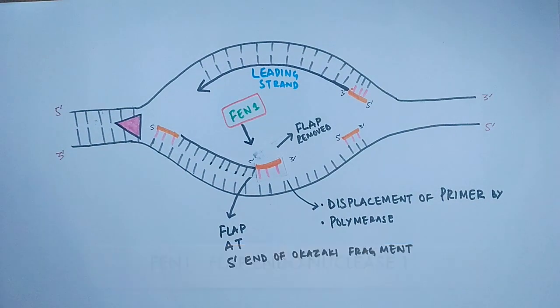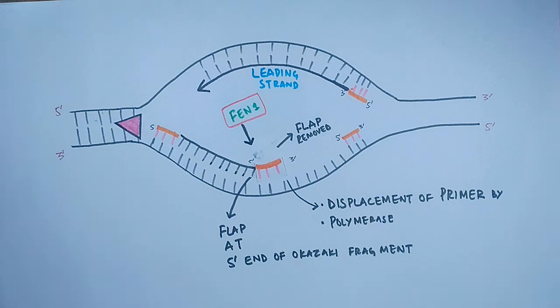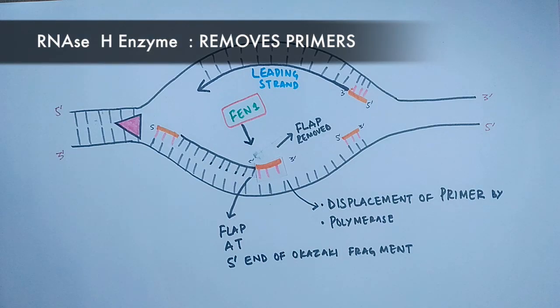And finally these primers in orange color ought to be removed as these are ribonucleotides. So for this we have RNase H enzyme which works on these RNA-DNA hybrids and cleaves the phosphodiester bonds in between ribonucleotides and deoxynucleotides and removes these primers.